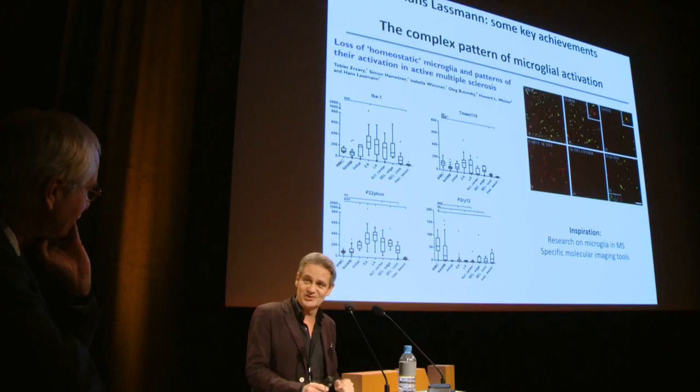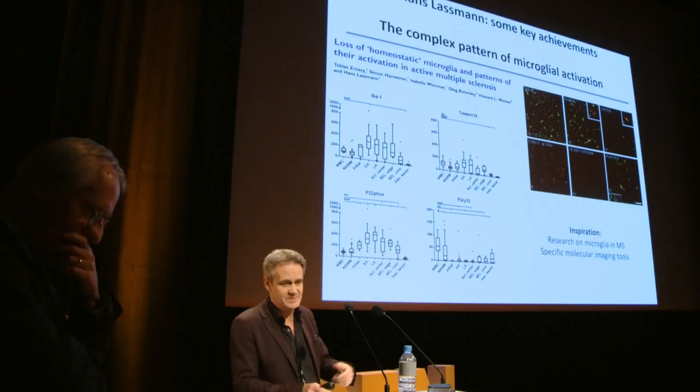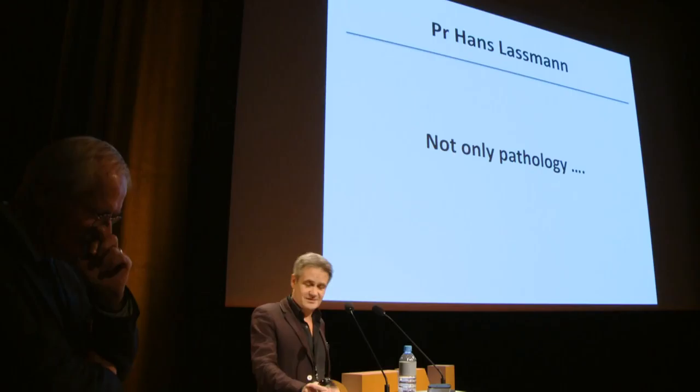Lassmann taught us how neuronal damage occurs, explaining links to oxidative damage and the role of iron release. This opened thinking about new therapies. He also described complex patterns of microglial activation with different subtypes in lesions, inspiring research into new tools — especially molecular imaging tools — to identify these cells.